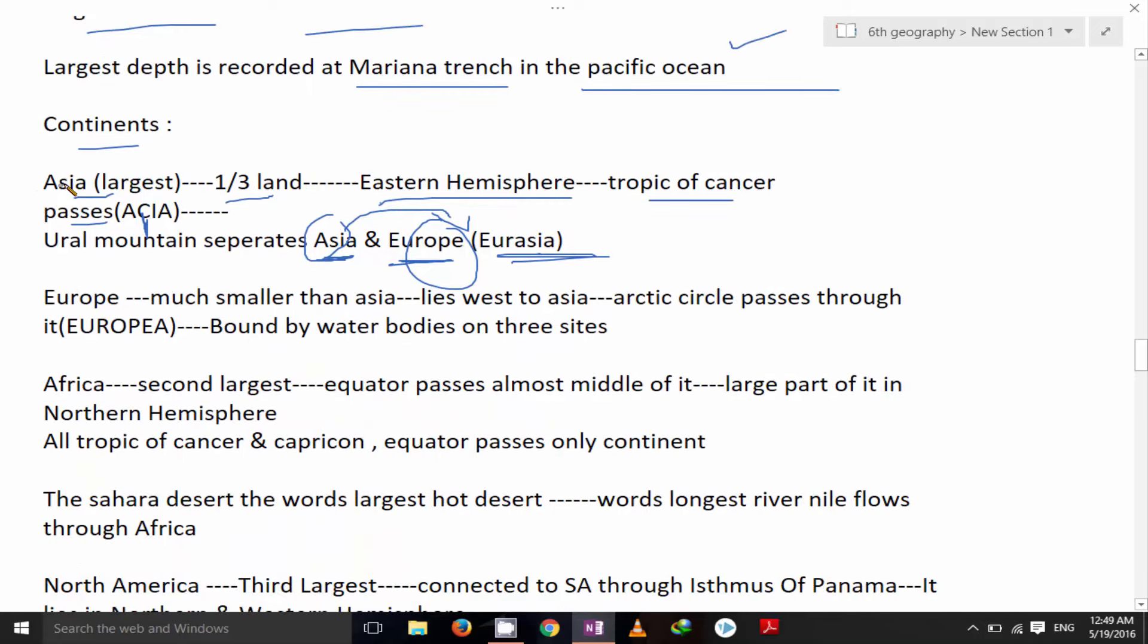Europe. Next continent is Europe. Much smaller than Asia, lies west to Asia. Arctic circle passes through it. So consider Europe, last A is for Arctic circle. Bound by water bodies in three sides.